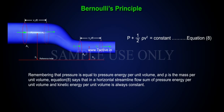Remembering that pressure is equal to pressure energy per unit volume and rho is the mass per unit volume, equation 8 says that in a horizontal streamlined flow, sum of pressure energy per unit volume and kinetic energy per unit volume is always constant.